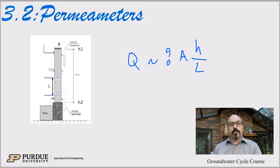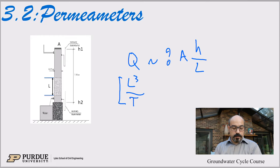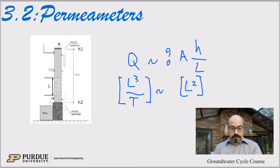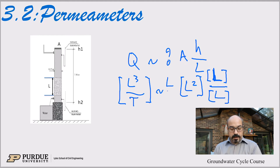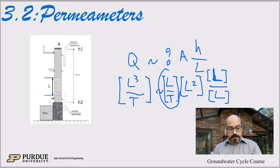Now the question is: what's missing? If we look at dimensions — the discharge Q is volume per time, area is length squared, and H over L is length per length, which is dimensionless. So what's missing here is a length per time term. We're missing a parameter with dimensions of velocity.